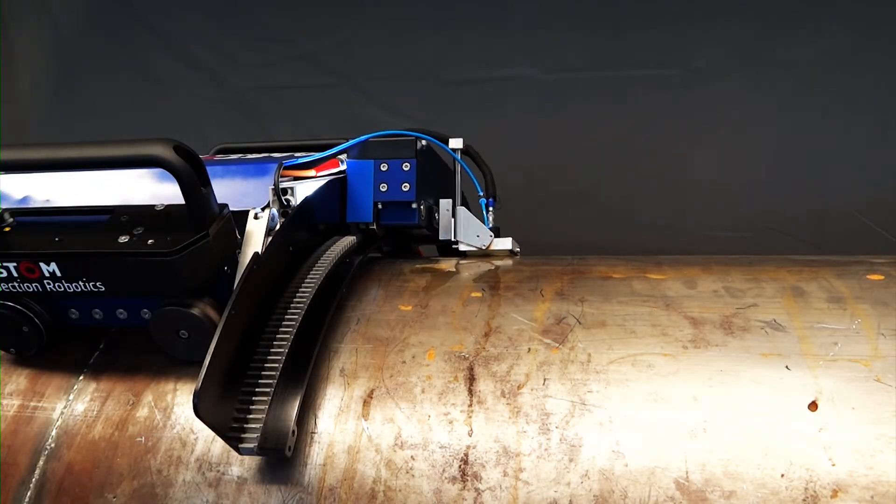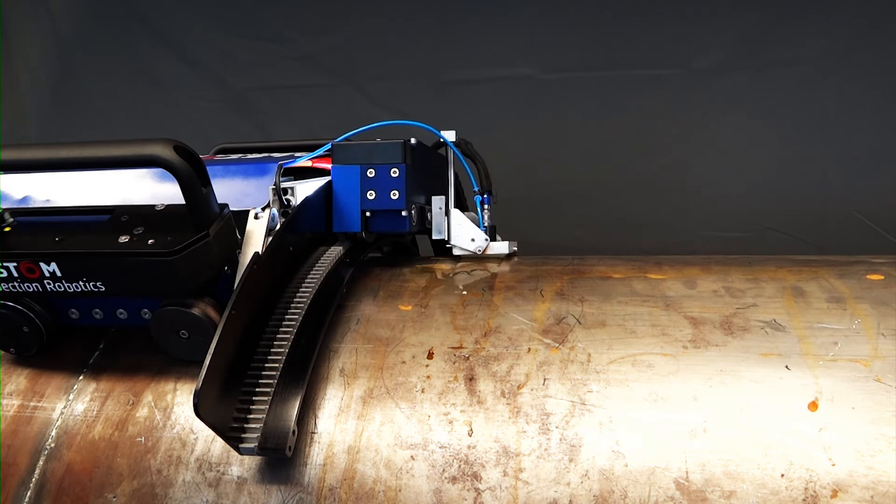This configuration is mostly used for corrosion mapping on the lower half of a pipe.